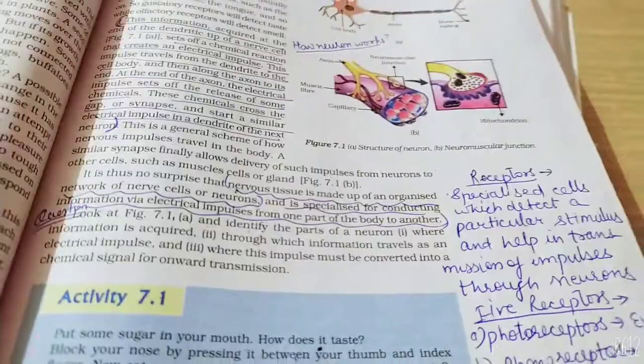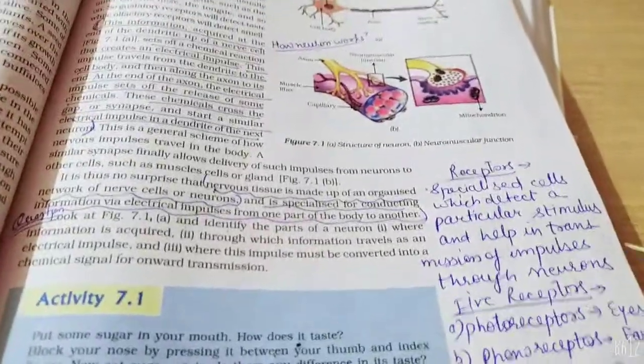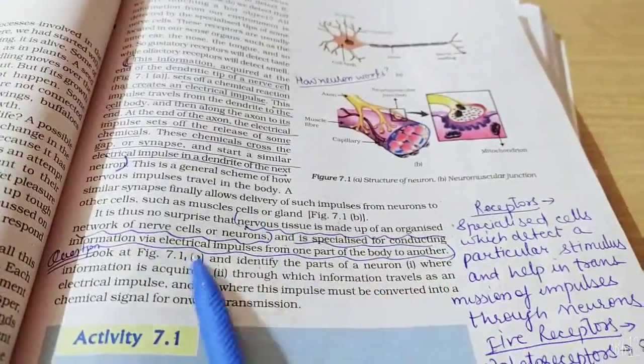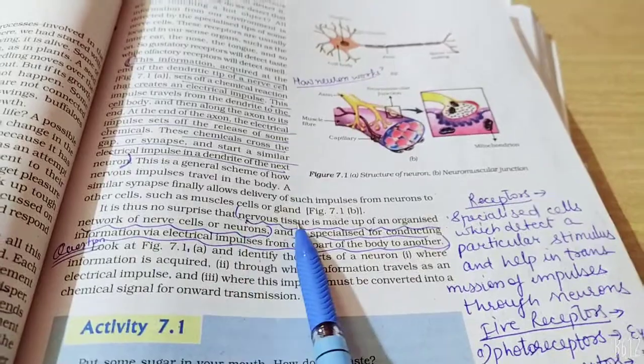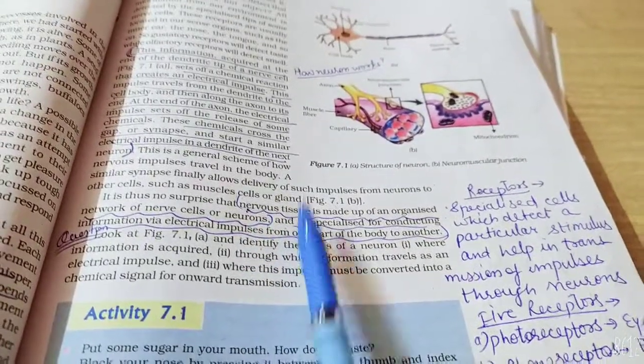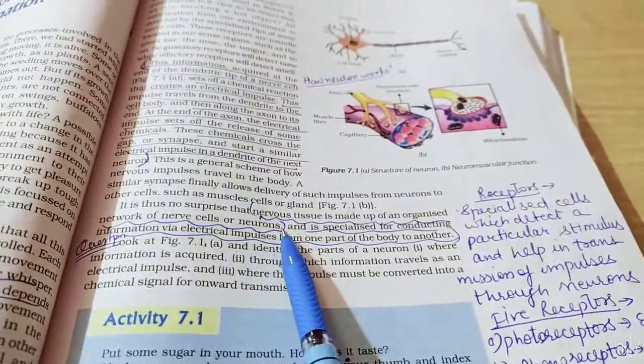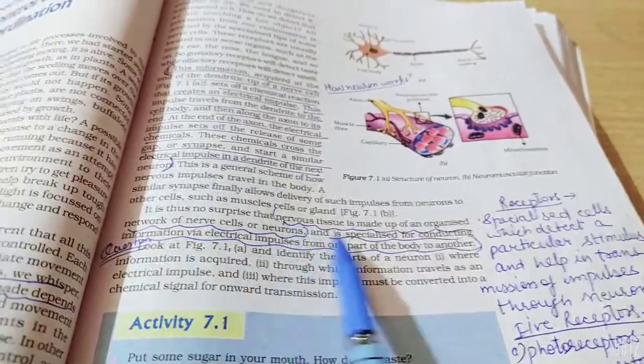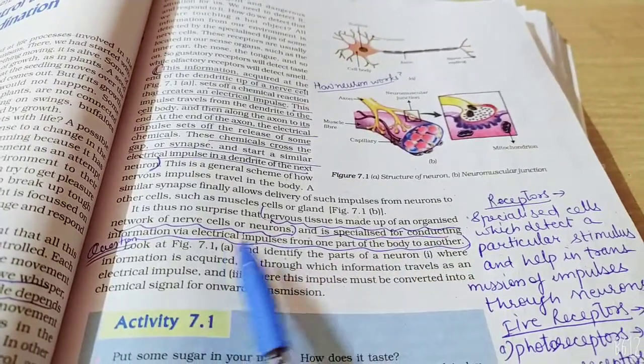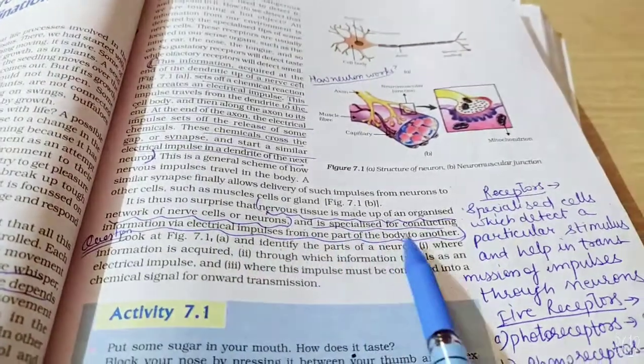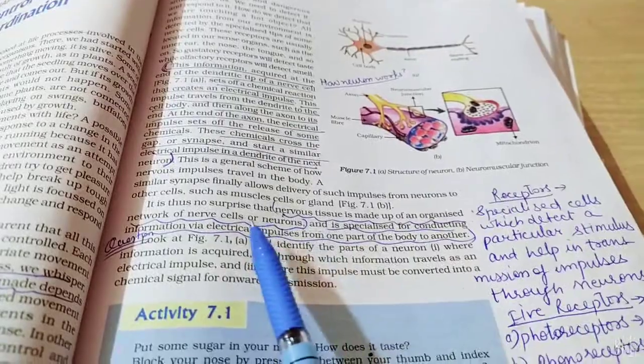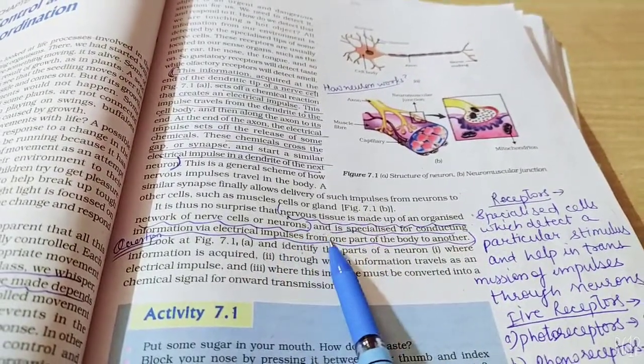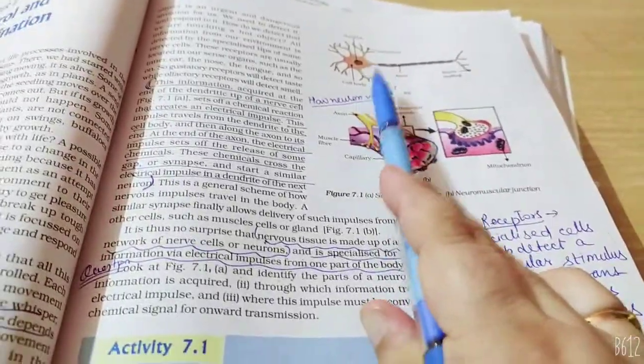We are continuing with the chapter control and coordination, video 2. Nervous tissue is an organized network of nerve cells. Nervous tissue is part of the nervous system. It is made with many neurons. Neurons are also called nerve cells. This is specialized for conducting information via electric impulses from one part of the body to another. The information is called electric impulse. Electric impulse is produced in neurons.